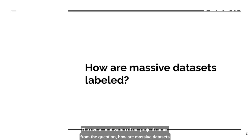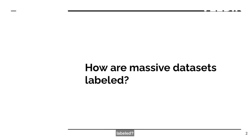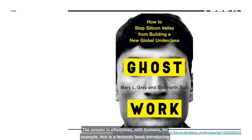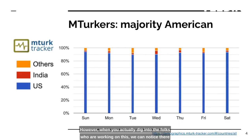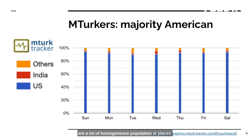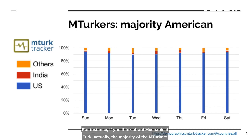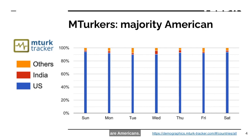The overall motivation of our project comes from the question: how are massive datasets labeled? The answer is oftentimes with humans. This is a fantastic book introducing the idea of ghost workers — people working in the background to ensure that downstream machine learning applications can run smoothly by, for example, labeling data. However, when you dig into the folks who are working on this, we can notice there are a lot of homogeneous populations. For instance, if you think about Mechanical Turk, the majority of MTurkers are Americans.